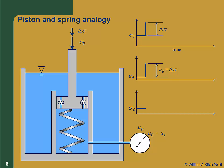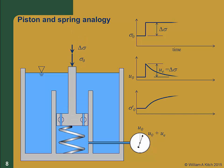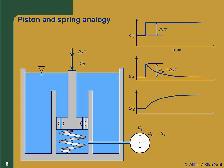We then open the valves in the piston, allowing water to flow out of the cylinder into the larger reservoir. However, the holes are very small and restrict the flow, simulating the hydraulic conductivity of the soil. As the water slowly leaks out of the holes, the pore pressure reduces, the piston moves down, and the spring takes up more stress — that is, stress is being transferred from the pore pressure to the spring. Since the spring represents the effective stress in the soil skeleton, we see the effective stress rise. Eventually, the pore pressure returns to u-naught. All of the stress increase, delta-sigma, has been transferred to the spring, and the final effective stress, sigma-f-prime, is equal to the initial effective stress plus delta-sigma, and all the change in stress has been transferred from excess pore pressure to effective stress.